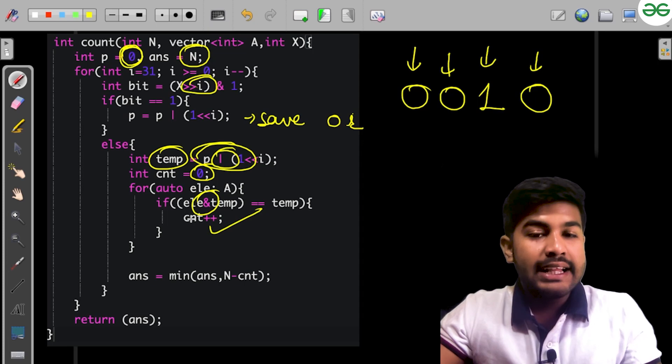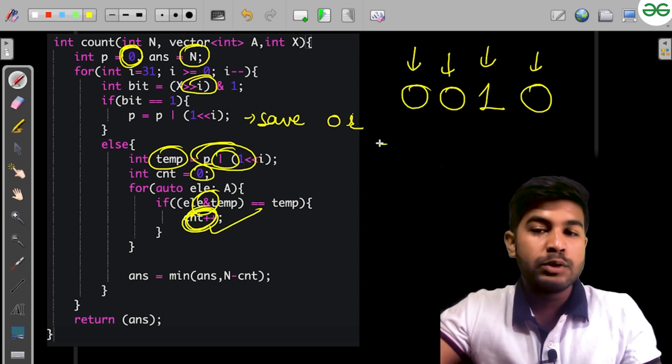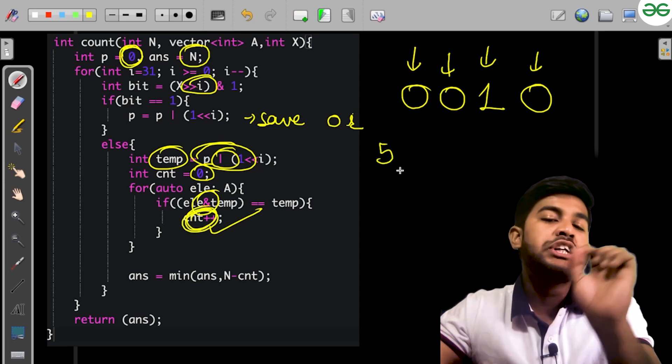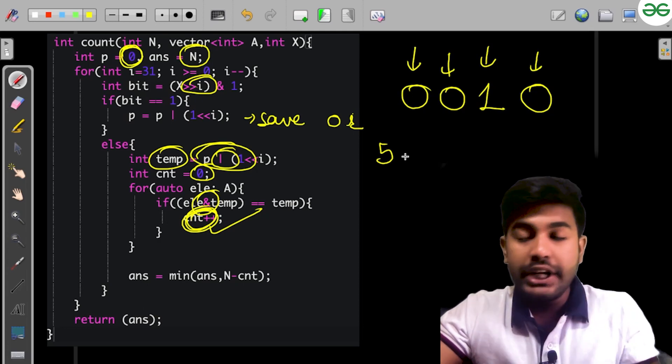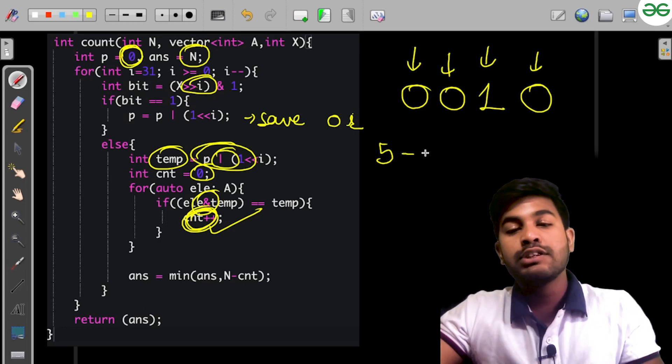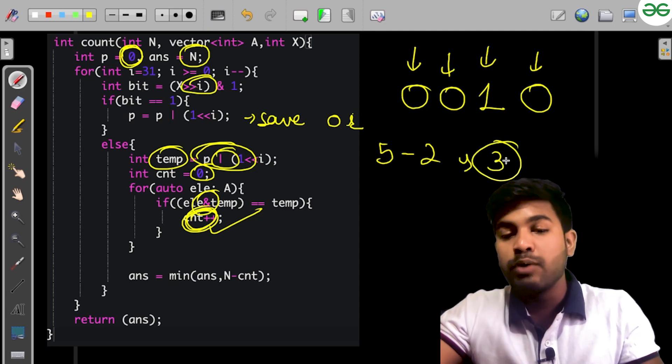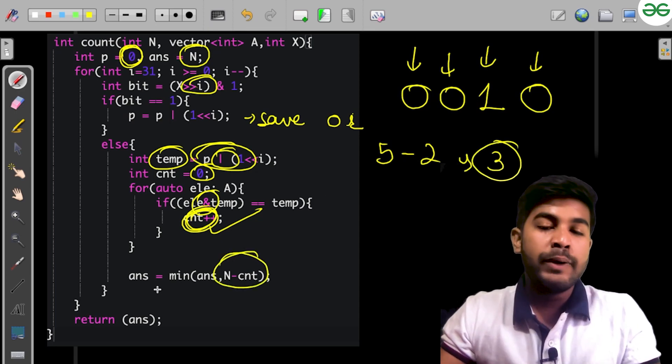We're doing an AND operation to find digits that don't need modification. If there are 5 digits and 2 don't need modification, we subtract that value and get 3 values that need modification. We store this in the minimum value.